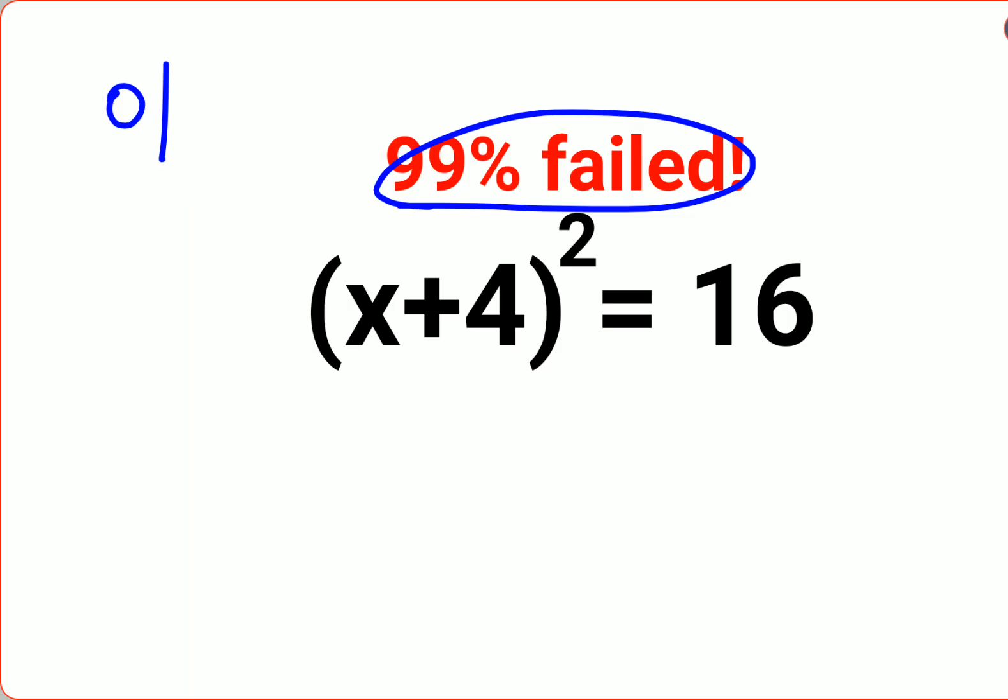Okay, see we have x plus 4 the whole square equals to 16. So in order to find the value of x, we just need to take square roots on both sides. And when you do square roots...